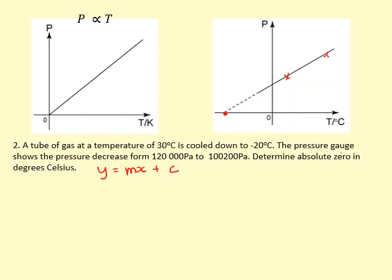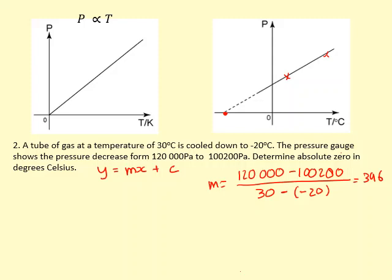So the gradient is going to be the change in pressure, being very careful with the signs here. If I calculate that, I get 396.